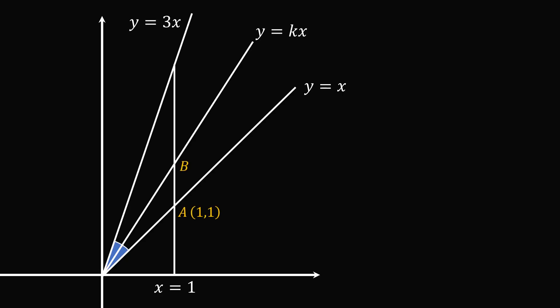The second point as B, this will be 1, k. And the third point as C, this will be 1, 3. Label the origin as O, and focus on triangle OAC.